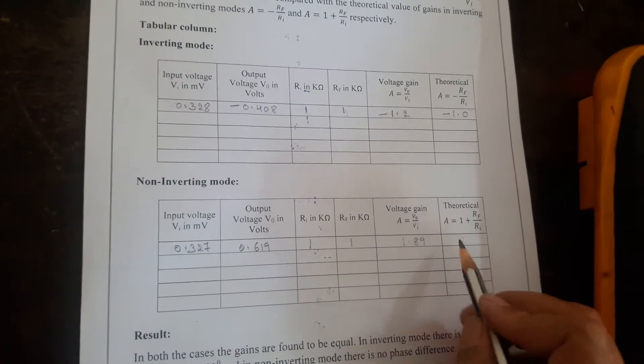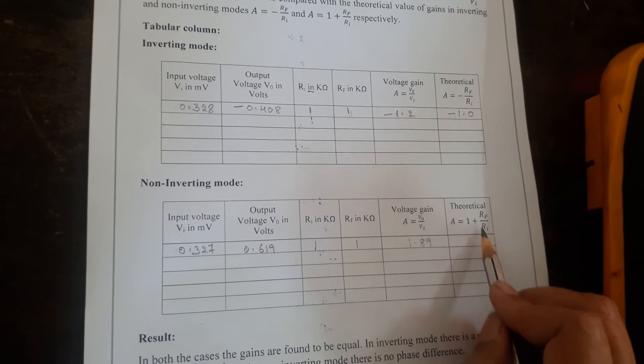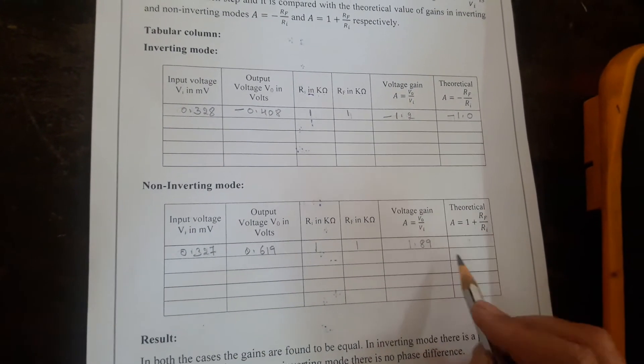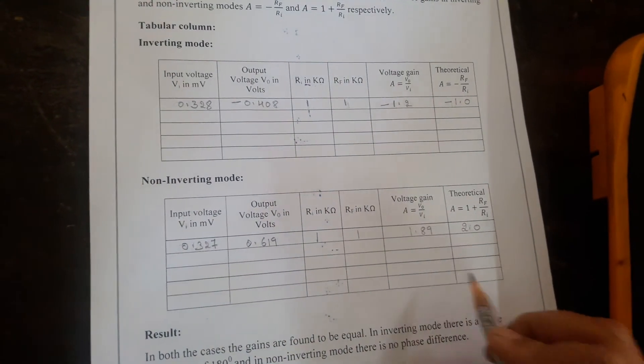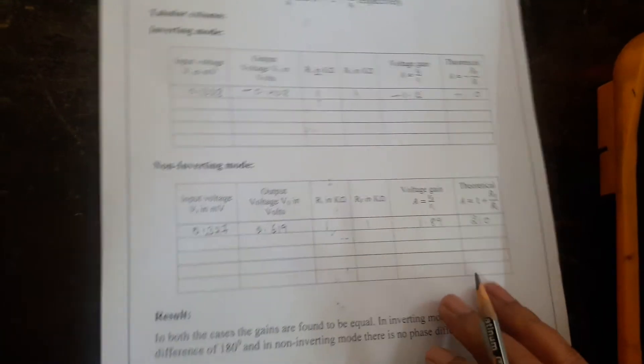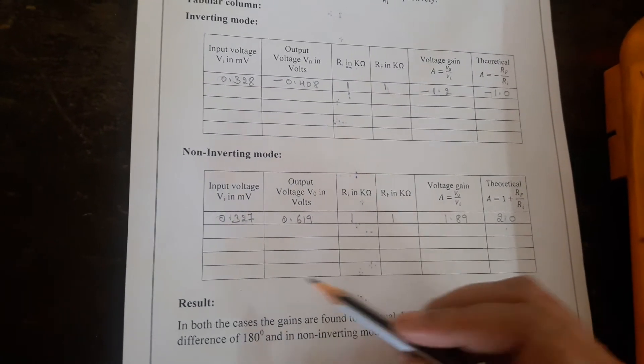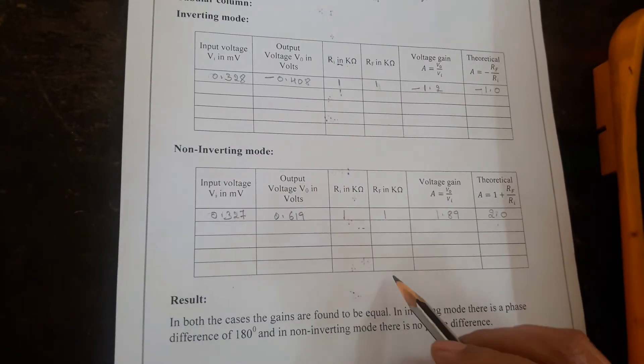Do the theoretical calculation using this formula 1 plus RF by RI. This ratio will be 1, 1 plus 1 will be 2. Write down this gain as theoretical gain as 2. These two must be comparable. In the same fashion as in the inverting mode, you just repeat the experiment for different set of inputs, tabulate the reading.